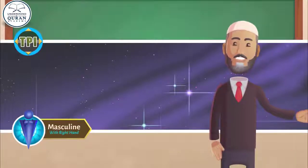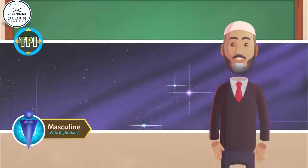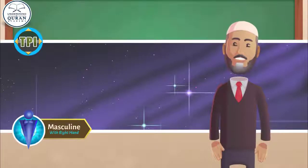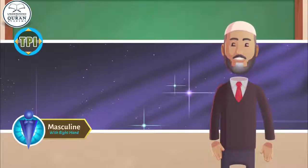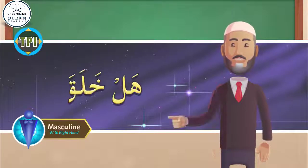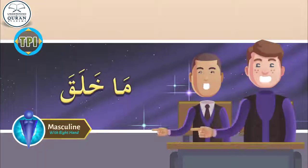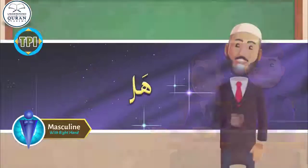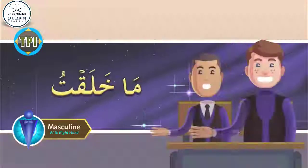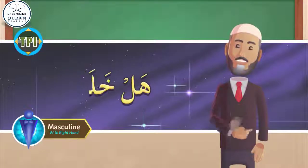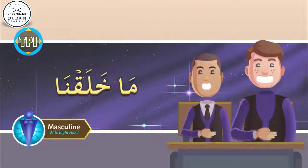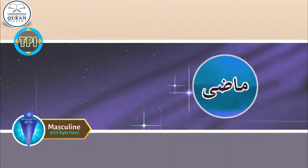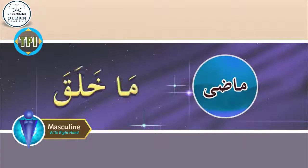Nobody has created in this world — only Allah is the creator. So when you negate, you say 'ma Khalqa.' Did he create? No, he did not create. Answer me in Arabic: Hal Khalaqa? Ma Khalaqa. Hal Khalqu? Ma Khalqu. Hal Khalaqta? Ma Khalaqtu. Hal Khalaqtum? Ma Khalaqna. So when you negate fi'l Madhi, you use 'ma.' Madhi is negated by 'ma.' Ma Khalaqa — he did not create.